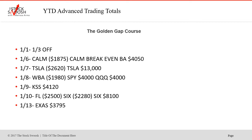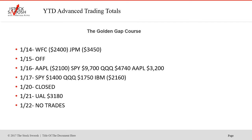January started out calm — two shots, one loser, break even. Boeing was a winner, Tesla was a loser then a big winner. Did Tesla a lot this year. WBA lost, Q's won. The market was very bullish. KSS was a win, Foot Locker lost. EXAS was a nice one on the 13th. I prefer to do one trade a day. WFC was a loser, JPM loser. Apple lost, Q's won, Apple won. SPY won, Q's won, IBM was a loser on the 17th. Close on the 20th, UAL was a winner.